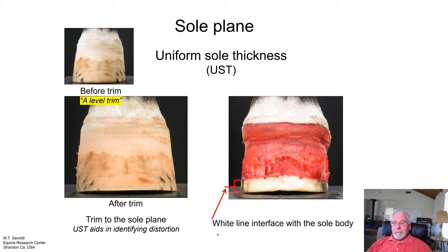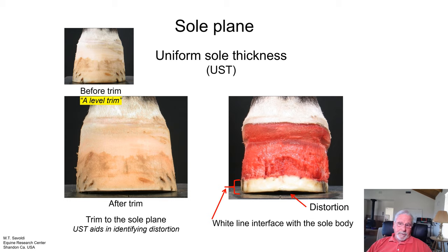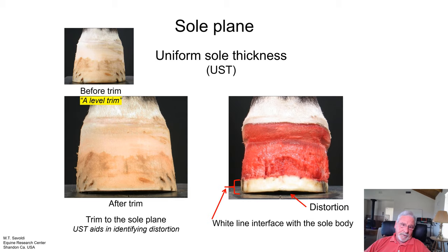I want to show you in a few minutes what this effect has on bone. UST — all the principles behind uniform sole thickness — simply denotes the distortions to the sole plane. The trim is the sole plane.